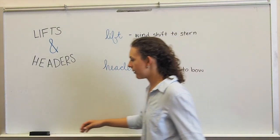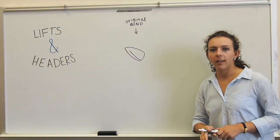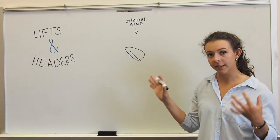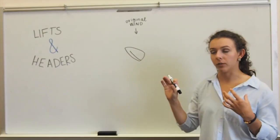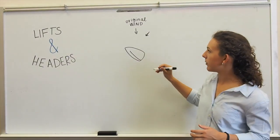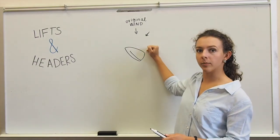So let's draw that out and see what that looks like. This is our original wind direction, what we're starting with. First we're going to depict a lift. By definition, a lift is a shift of the wind to the stern. So that means our wind is now coming from this direction. It was here and it's shifting to come over the stern a little bit.